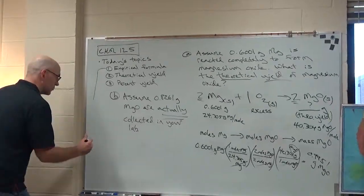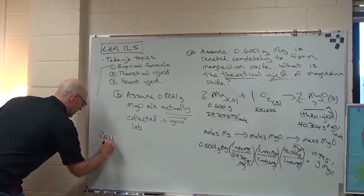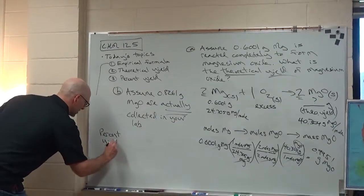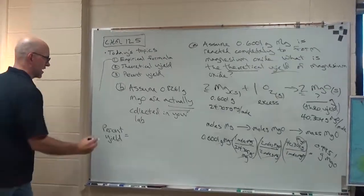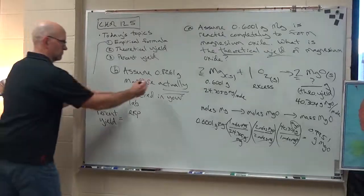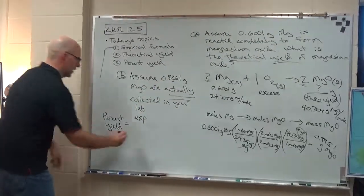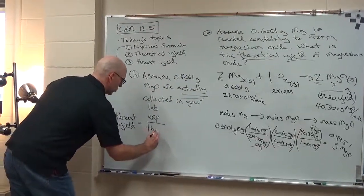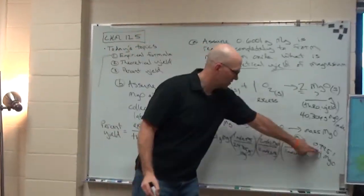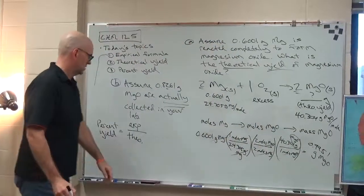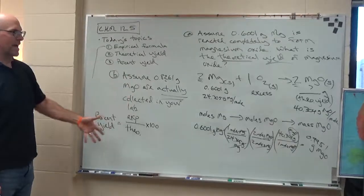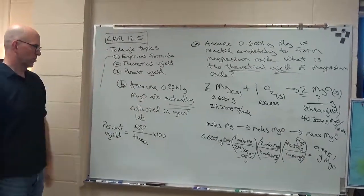So the equation that we use to calculate this is not theoretical yield, but percent yield. And there's different ways of writing this, but it's basically the same thing. It's what you got in the actual experiment divided by your theoretical yield. That times 100. That gives you an idea of how well did you do the reaction, how efficient were you, how good were you?